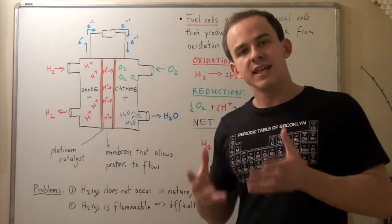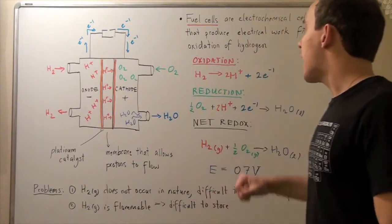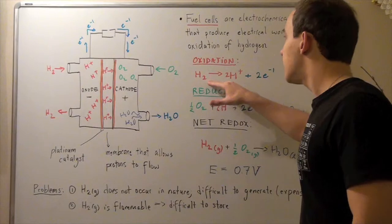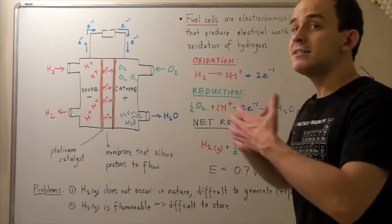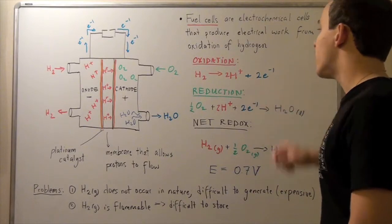Let's look at oxidation and reduction reactions found in a fuel cell. Our oxidation is as follows: a diatomic hydrogen is oxidized and releases two H-plus ions and two electrons.